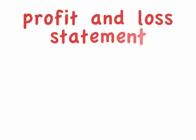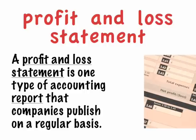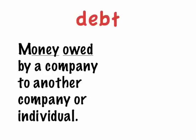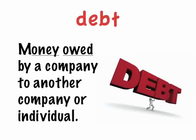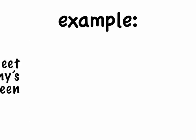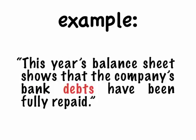A profit and loss statement is one type of accounting report that companies publish on a regular basis. Debt is money owed by a company to another company or individual. Most corporate debt is in the form of loans from banks or bonds that have been sold to investors. This year's balance sheet shows that the company's bank debts have been fully repaid.